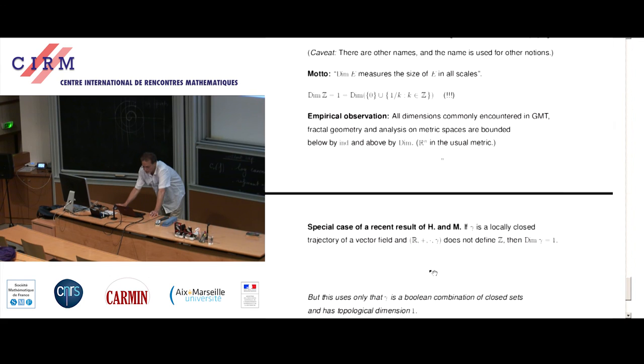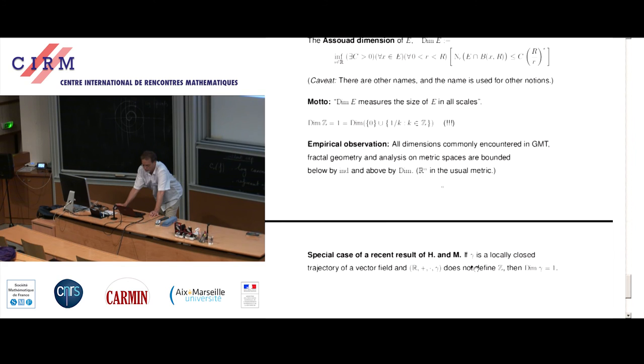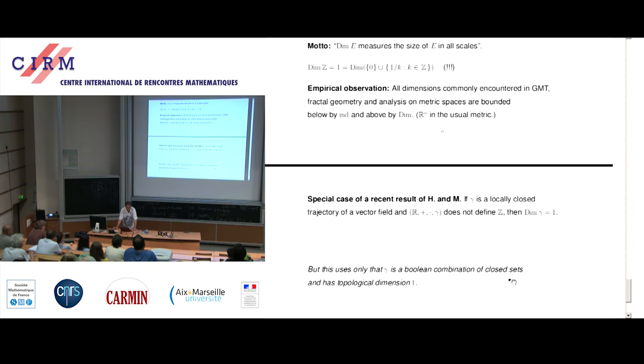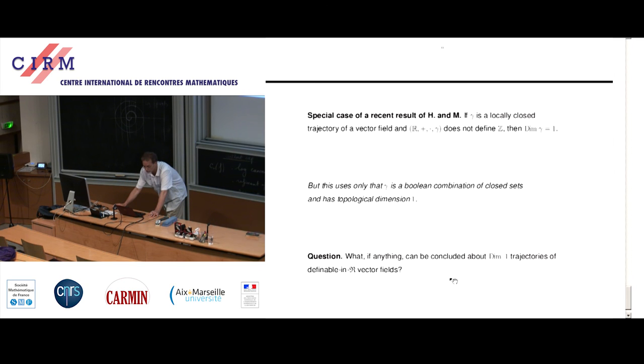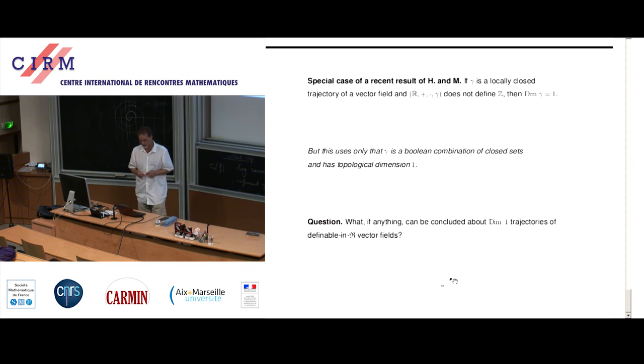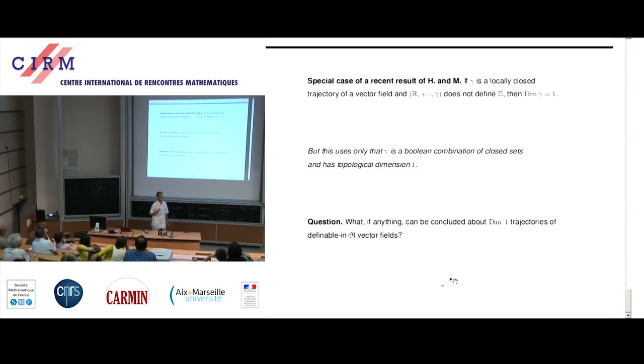All dimensions commonly encountered in geometric measure theory, fractal geometry, and analysis on metric spaces are bounded below by ordinary topological dimension, the small inductive dimension, and above by Asawa dimension. So when these things collapse, this is what some of these people in the field call anti-fractal. The point being is that no matter what definition of fractal you want to try to use, if these things square up, topological dimension and Asawa dimension, you are not a fractal. As a special case of a recent result of Philip and I, if I start with a locally closed trajectory of a vector field, and when I generate the structure over the field of reals with it and it does not define the integers, then it has to have Asawa dimension 1. Here's my fishing expedition. What, if anything, can I conclude about Asawa dimension 1 trajectories of good vector fields?